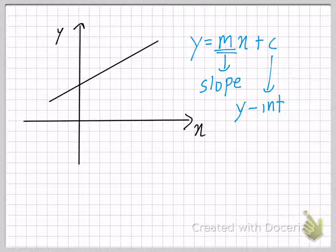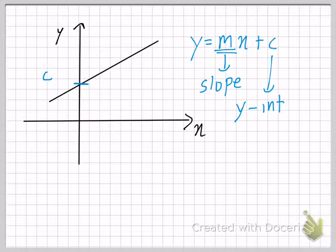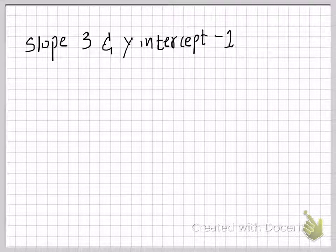Now, what do I mean by that? The y-intercept is the point at which your line cuts the y-axis. Now, if I simply give you the slope and y-intercept of any line, you should be very easily able to calculate its equation. As you already know that the equation of a straight line is written in the form y equals mx plus c.